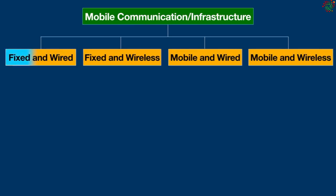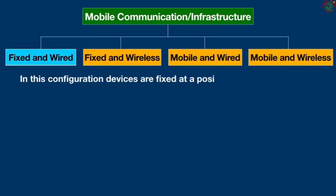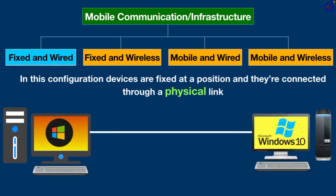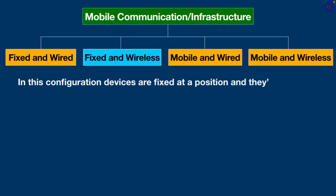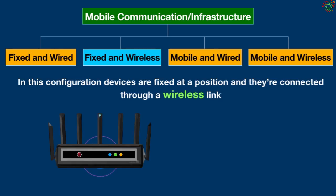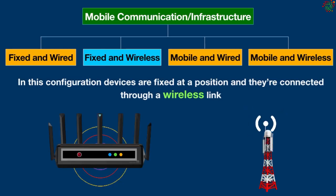Fixed and wired: in this configuration, devices are fixed at a position and connected through a physical link to communicate with other devices — for example, desktop computers. Fixed and wireless: in this configuration, devices are fixed at a position and connected through a wireless link to make communication with other devices, such as Wi-Fi routers and communication towers.